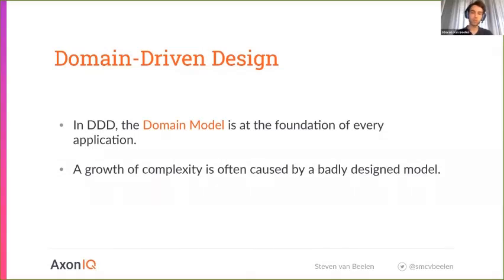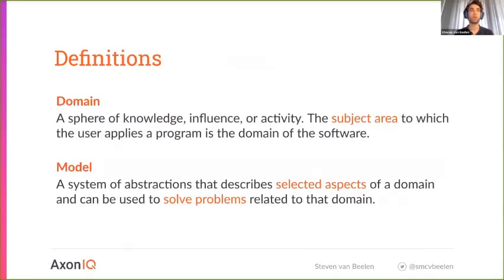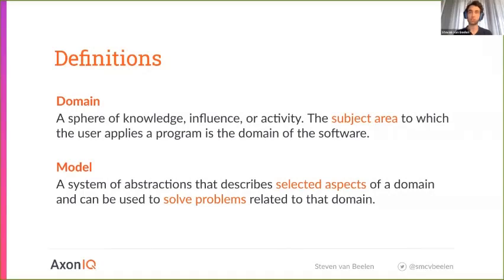What do I really mean by a domain model? Let me separate those two words. The domain is a sphere of knowledge, influence, or activity — really the subject area to which a user applies a program. The model, on the other hand, is a system of abstractions that describes selected aspects of that domain to solve specific problems related to it.